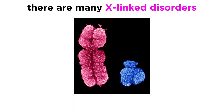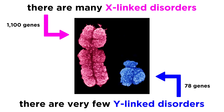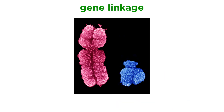There are a large number of X-linked disorders, given that the X chromosome is so much larger than the Y chromosome, containing some 1,100 genes, whereas there are far fewer Y-linked disorders since it has only 78 genes, some of which are duplicates, although these can exist as well. Now that we understand X-linked genes, let's move forward and look at gene linkage in a more general sense.